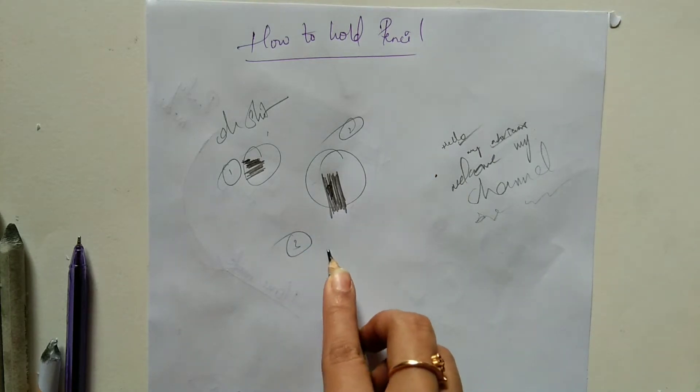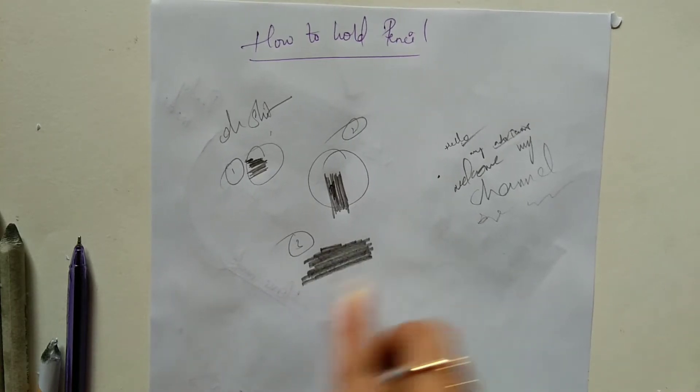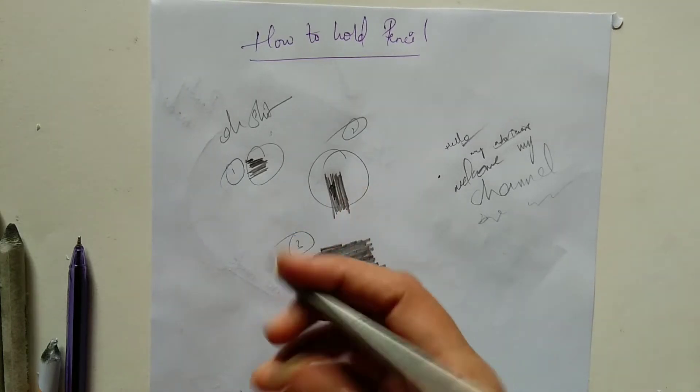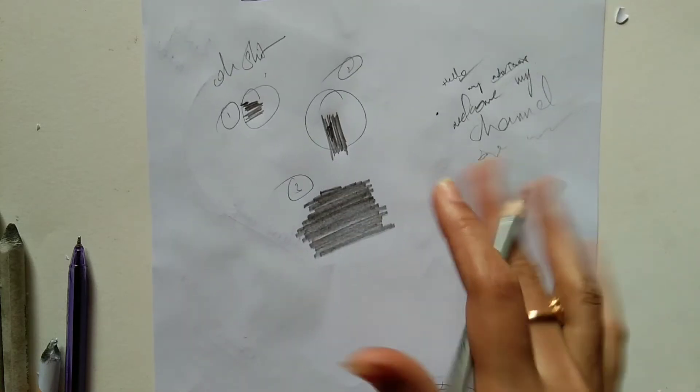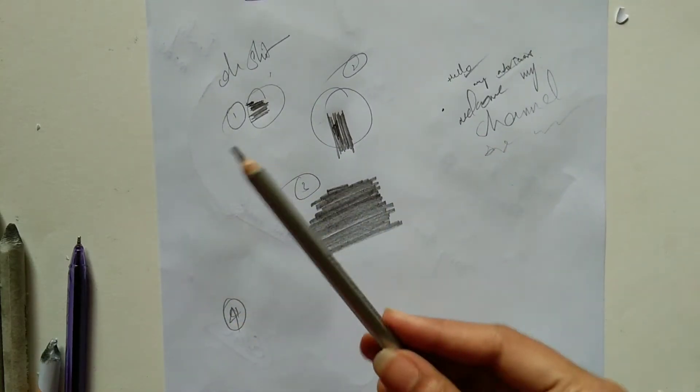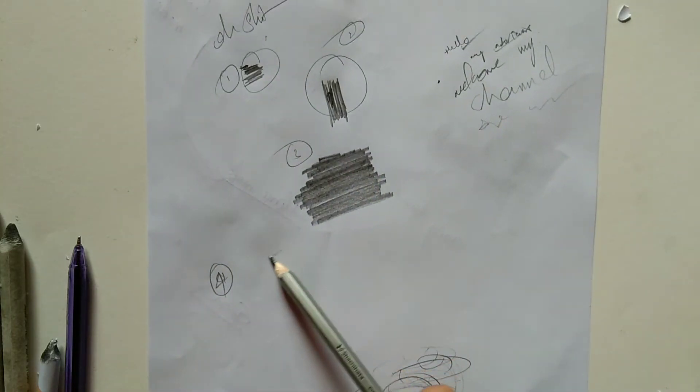The third technique of holding pencil is placing one finger on lead and applying pressure. This can give a uniform texture because you can see what is happening below. This can also be easily blended and you can control pressure.